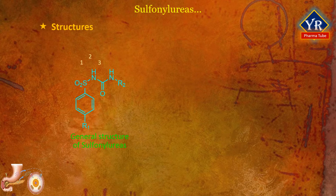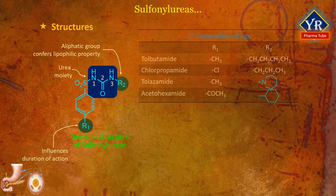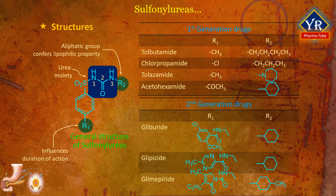The sulfonylureas may be represented by the structure shown. Sulfonylureas are urea derivatives with an aryl sulfonyl group in the first position and an aliphatic group at the third position. The aliphatic group R2 confers lipophilic properties to the molecule. Maximal activity results when R2 consists of three to six carbon atoms as in chlorpropamide, tolbutamide, and acetohexamide. Aryl groups at R2 generally give toxic compounds. The R1 group on the aromatic ring primarily influences the duration of action of the compound.